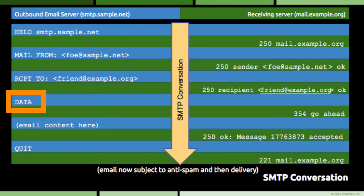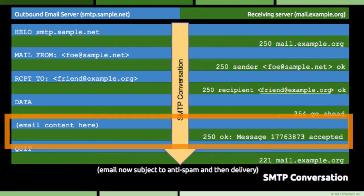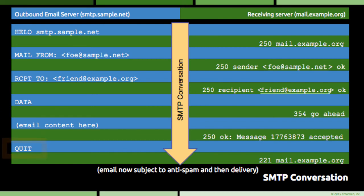To finish off this conversation, the outbound server sends the DATA command to tell the receiver that the actual content of the email is coming up, which the receiver acknowledges with a numeric code of 354. The email content is transmitted, and then the outbound server disconnects with the QUIT command. Note that after the email content is delivered, the receiving server can add extra information after the 250 response. This is very useful when humans need to get involved — the operator of the outbound server can contact the operator of the receiving server and ask what happened to a specific piece of email identified by number, and the operator on the other end can track down its fate.